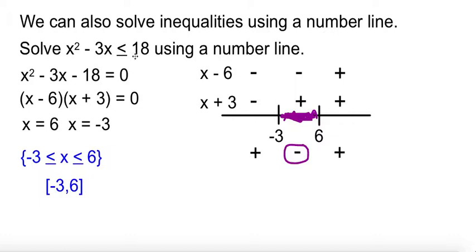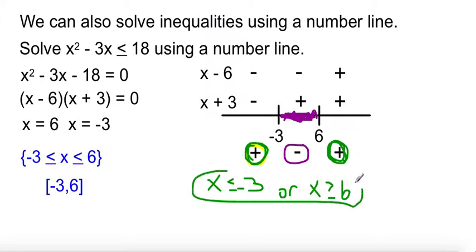Had this said positive, then we would have been looking at this zone and this zone. So we would have said x less than or equal negative 3 or x greater than or equal 6. I shouldn't say and, I should say or because it's either one. Had this been greater than up here, then we would have written it like this.